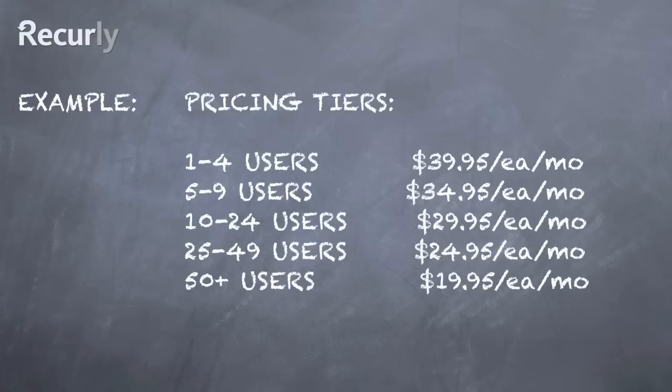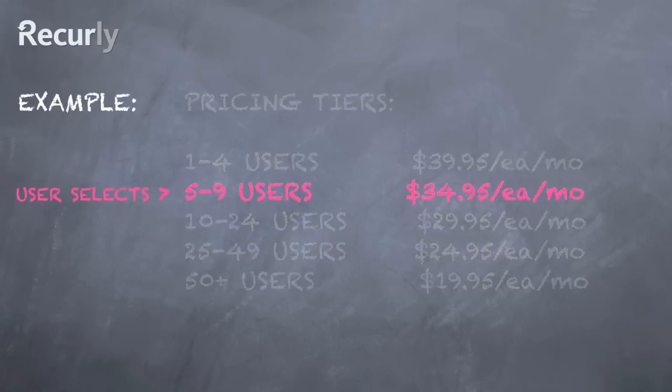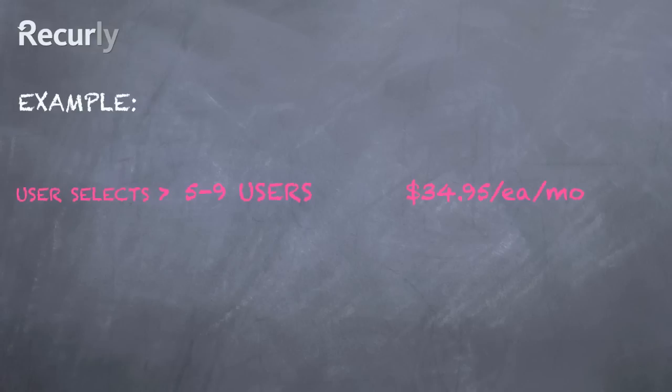Here are some example tiers you would typically see. In our example, the customer has eight users, and so they select the five to nine tier. Let's take a look at how you'd handle that.